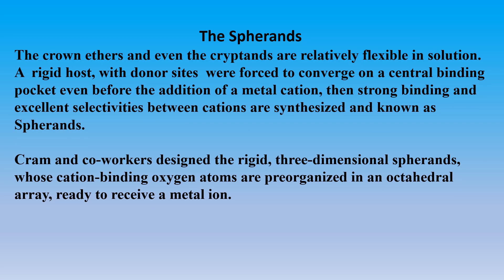Finally we are going to see the spherands. The crown ethers and cryptands are relatively flexible in solution; however, they may be somewhat rigid in solid state but flexible in solution. Researchers started searching for a rigid host with convergent binding sites even in the solution state for a metal cation. They came up with the idea of spherands. Cram and coworkers designed the rigid three-dimensional spherands, which have cation-binding oxygen atoms pre-organized in an octahedral array, ready to receive a metal ion.